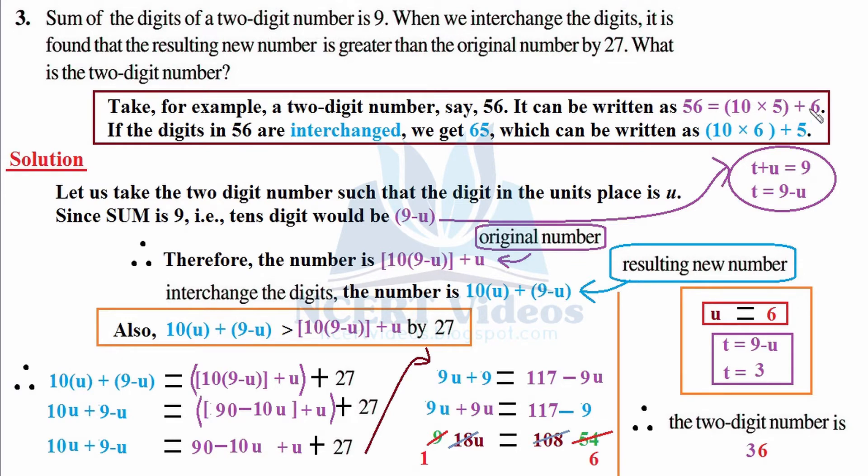Therefore the number is 10(9-u) + u. We wrote 10, then our tens digit 9-u in brackets, and this whole tens digit multiplied individually. We wrote in larger brackets and we write units digit as it is, plus u. This complete thing gives us the original number that we are talking about in the question.